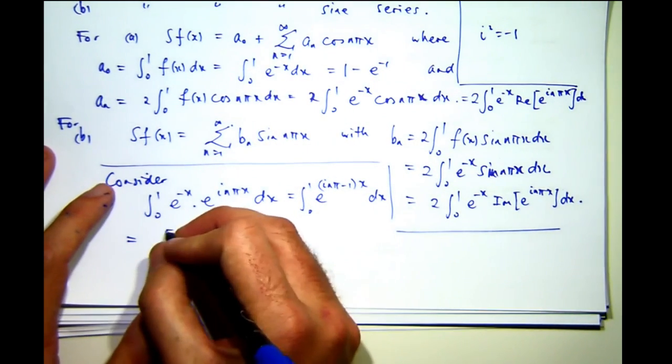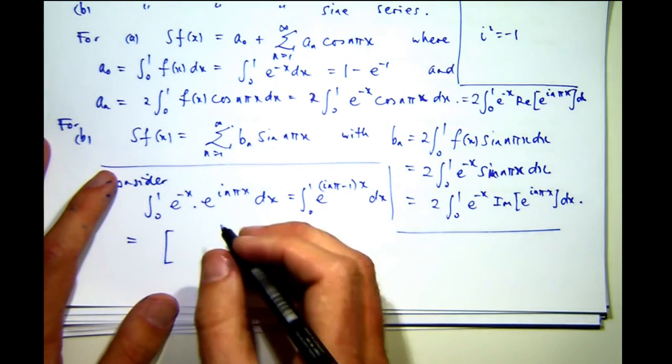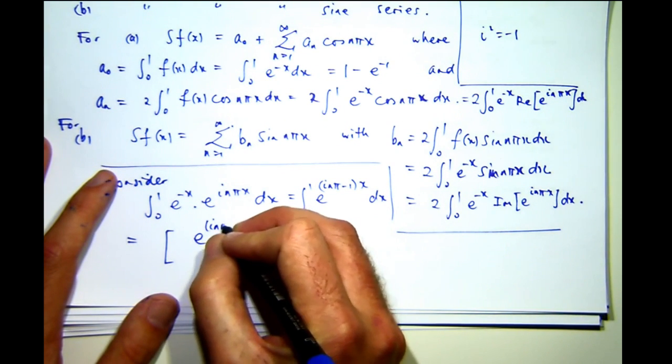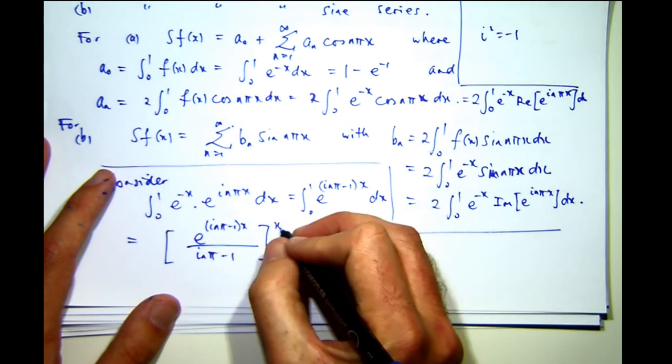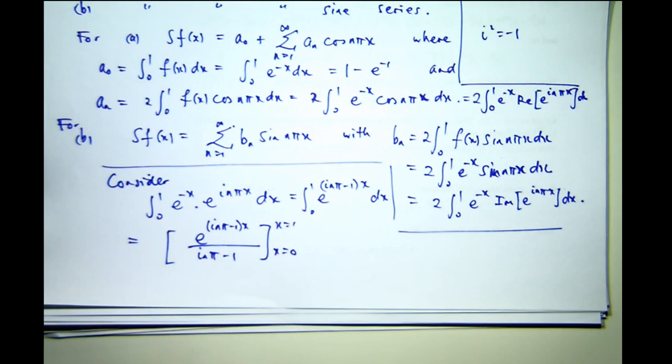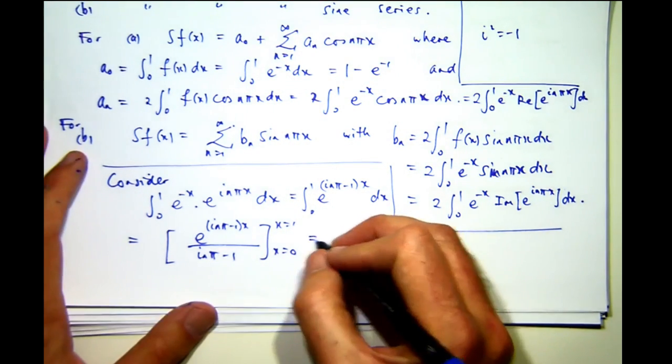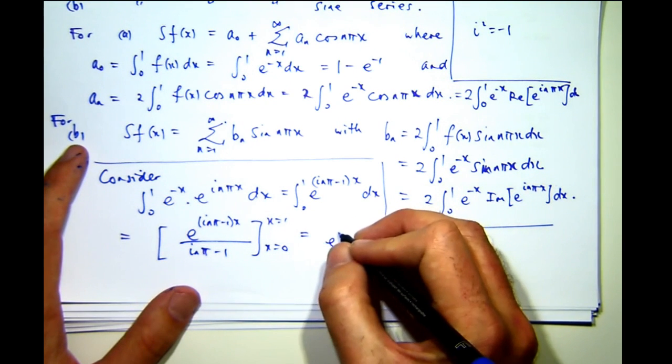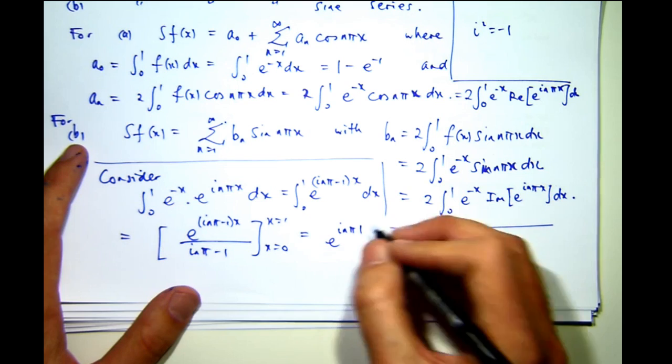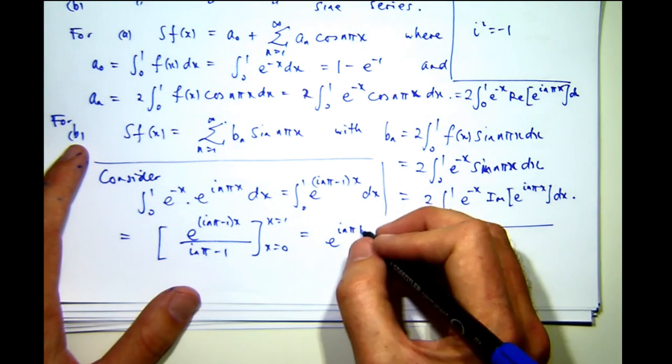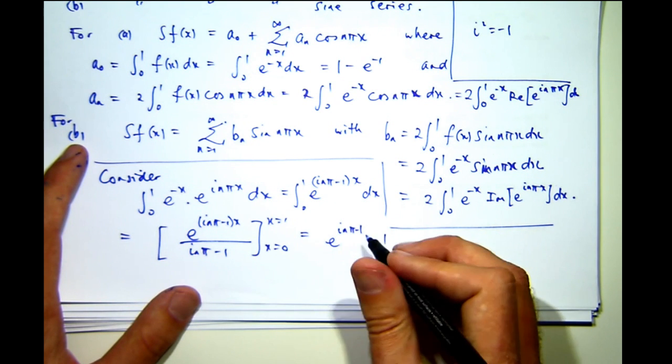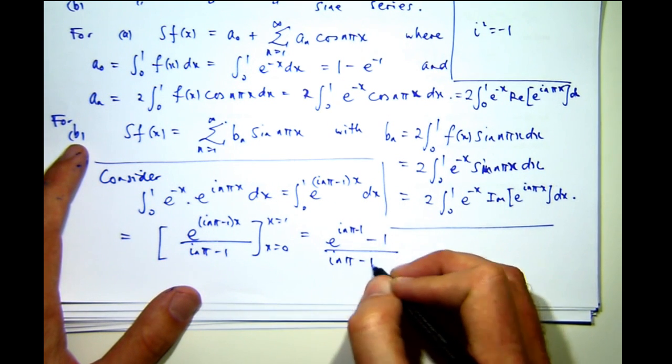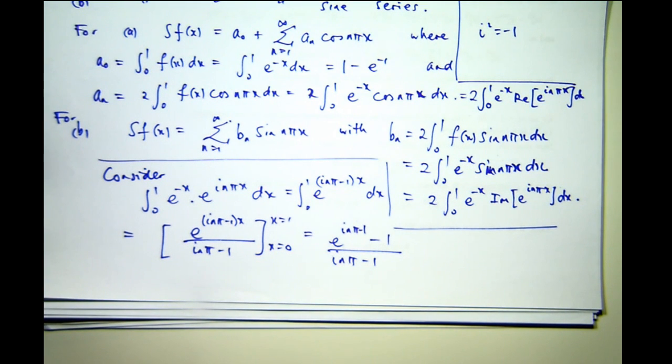Alright. So, if we do one integration, just in the regular way, that was pretty easy. And if you sub in x equals 1 and x equals 0, minus 1. So, x to the 0 is going to give you 1. So, now all we need to do is pick out the real and imaginary parts from this bottom line.